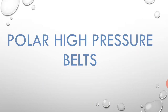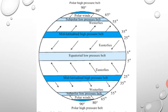The fourth and final pressure belt is the polar high pressure belt. In both polar regions, the temperature is mostly 0°C throughout the year, so the air is cold and heavy, resulting in high pressure belts. This is the opposite of the equatorial region: high temperature causes low pressure at the equator, while low temperature causes high pressure at the poles. Polar high pressure belts generally occupy the area between 80° and 90° parallels in both hemispheres.